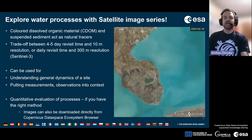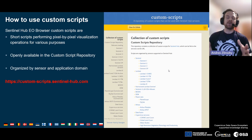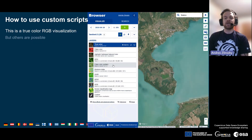Looking at custom scripts: there is a massive custom script repository at custom-scripts.sentinelhub.com for many different satellites and applications. A custom script is a short JavaScript code snippet which performs a pixel-by-pixel analysis and visualization in one of these browser applications — either the Copernicus Data Space browser or the Sentinel Hub EO Browser. In the repository you can open a piece of code and paste it into the browser.